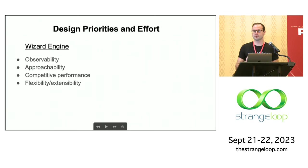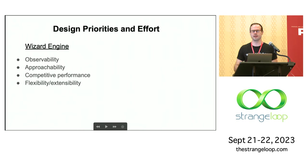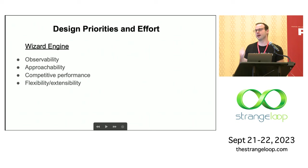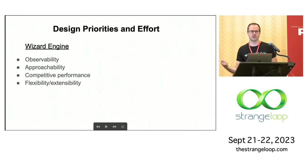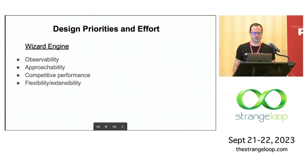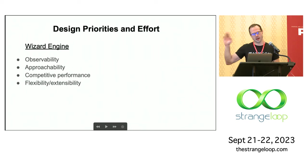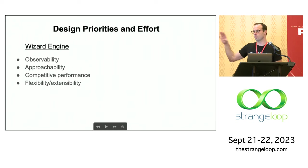It needs to be competitive in terms of performance. It doesn't have to be top-tier — it's not going to be as fast as a production engine like V8. But it has to be close enough so that if you have a research result in the research engine, you can at least see how it might transfer. You have to be in the same ballpark. And then last but not least, it needs to be flexible and extensible because that's what students are going to work on.